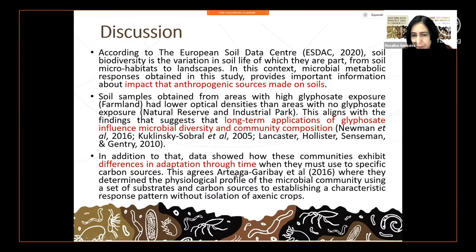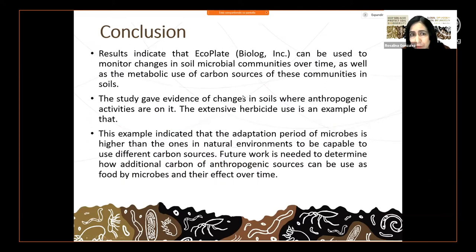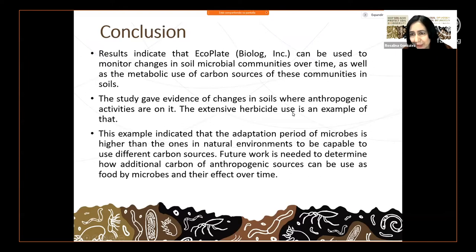This community exhibits differences in adaptation through time when they must use specific carbon sources. This information is easy and fast to use, requires a low amount of sample, and we can see the microbial community response. Results indicate that the Eco Plate can be used to monitor changes in soil microbial communities over time. Extensive herbicide use is an example of anthropogenic activity impacting soils, and the adaptation period of microbes is higher than in natural environments.